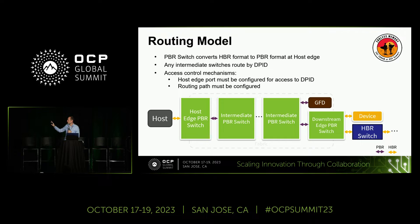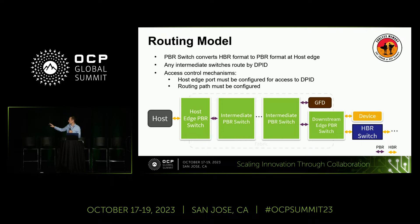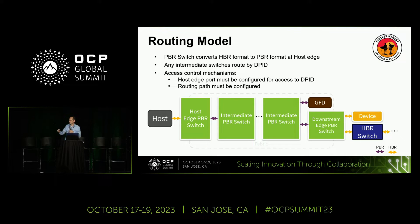This is how we manage that new ID concept and conceal those details from the host. If you look on the far left, you've got a host connected to the host edge PBR switch. Color coded here, we have the FLT format for those links. The host is operating in legacy CXL mode — what we call host-based routing, or HBR. It doesn't actually know it's talking to a CXL fabric, and that's by design. We don't want it to have to comprehend that complexity. At the host edge, that PBR switch is going to convert the transactions from HBR format into PBR format.